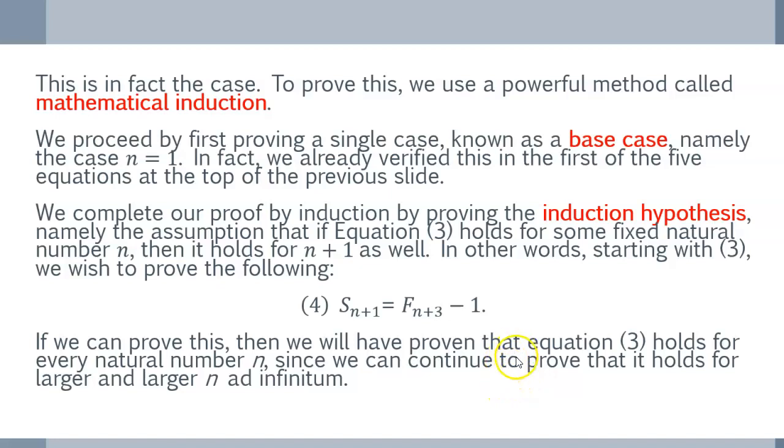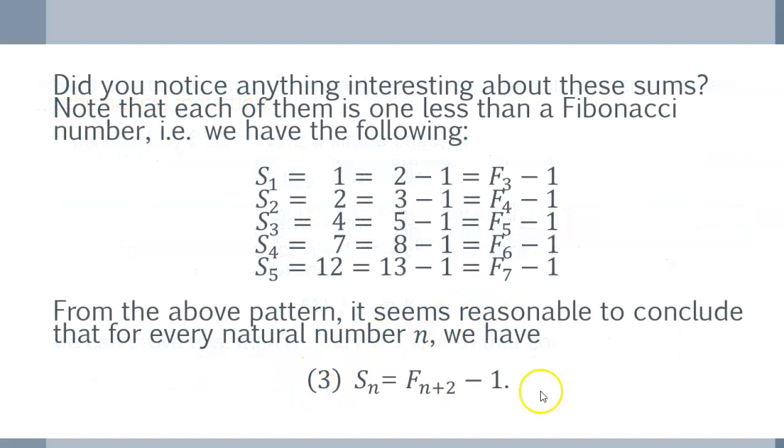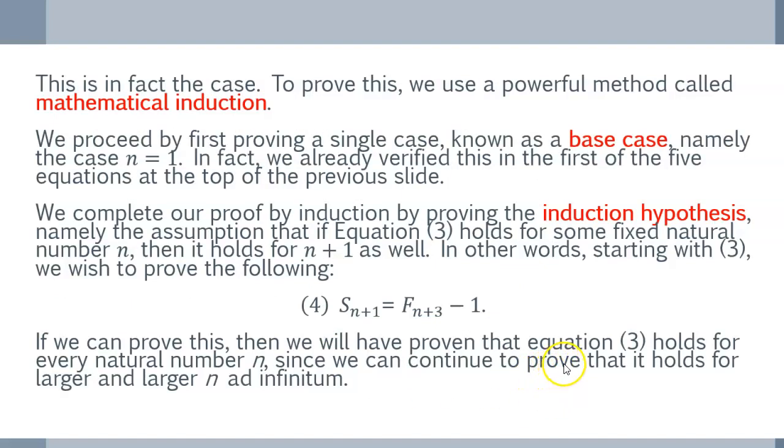But then, the way to complete our proof is by proving what's called the induction hypothesis. And what the induction hypothesis is, is the assumption that if the equation 3, which I wrote down here, holds for some value of n, and we already know it holds for n equals 1, then it holds for n plus 1 as well. And this is true for all n. So, for instance, we know that it works for n equals 1. And if we can prove the induction hypothesis, then it also holds for n equals 2. And by the same induction hypothesis, it holds for n equals 3, n equals 4, somewhat, all the way up to infinity. So, we just have to prove the induction hypothesis.